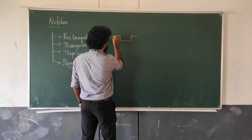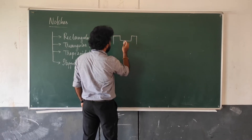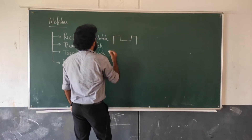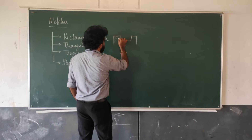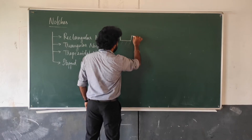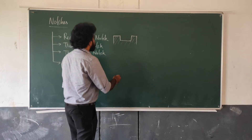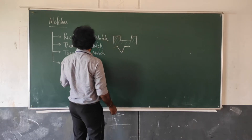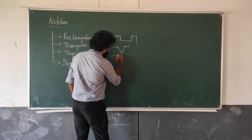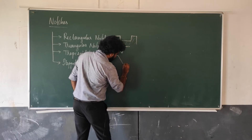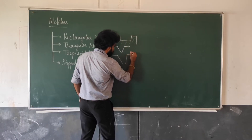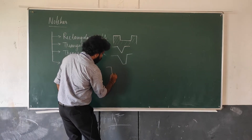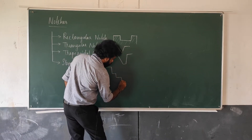Rectangular notches have a rectangular shape. Triangular notches have the shape of a triangle. Trapezoidal notches are a combination of a triangle and a rectangle — this is the trapezoidal notch.